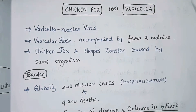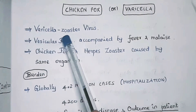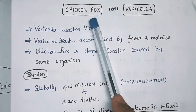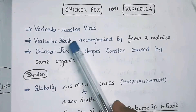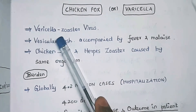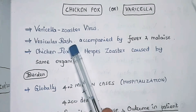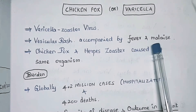In this video we are going to see about chickenpox, which is also called varicella. It is caused by a virus named varicella zoster virus. Varicella zoster virus causes chickenpox as well as herpes zoster. It is characterized by a vesicular rash accompanied by fever and malaise.